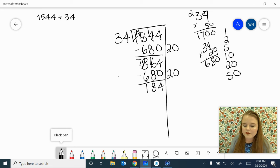I can't take 680 again, so I have to figure out what I can multiply by 34 to get close to 184. I know it has to be less than 10 because 10 times 34 would be 340. So let's try 5. 34 times 5. 4 times 5 is 20. 3 times 5 is 15. 16, 17. That'll work.